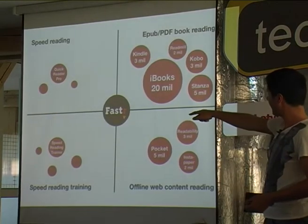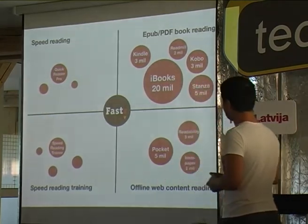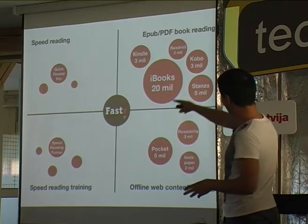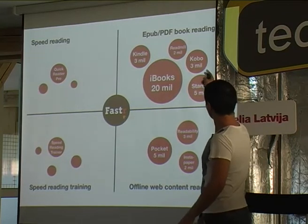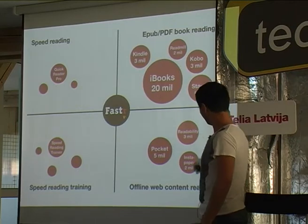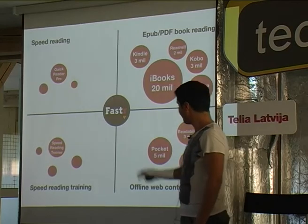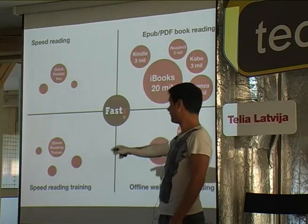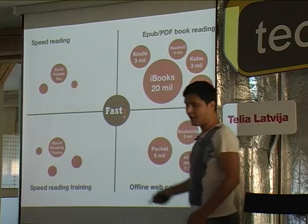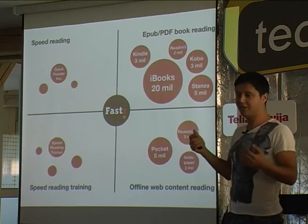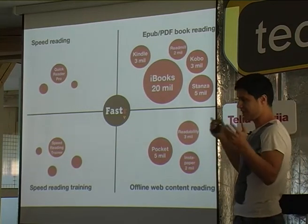Just today I was at SiteComm and we presented there. This is our marketing positioning — you can see we are targeting all segments. The four main segments are: simple EPUB book readers, web content readers, and speed reading training apps — several of which are already successful. But there is nothing interesting in the speed reading space that is not just training but an app for daily use — one that you can use to train and read the material you actually want.